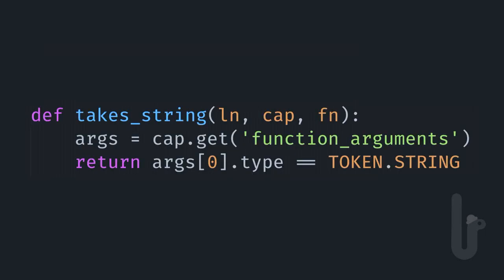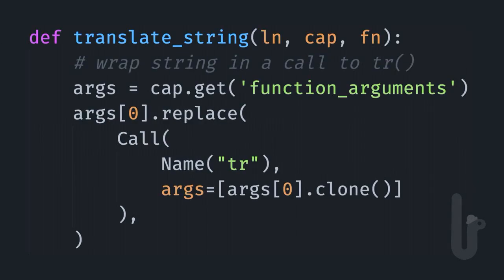The custom filter function essentially returns true or false on whether the element should be modified. It takes the leaf or node and the capture dictionary — you treat it the same way you would with transforms. You get the captured element out of it, and in this case we look to see if the first argument from that function is the string literal and return true or false. The actual modification looks almost exactly like what we had before — the modifier takes the leaf or node and the capture dictionary, then does the appropriate change in the syntax tree.